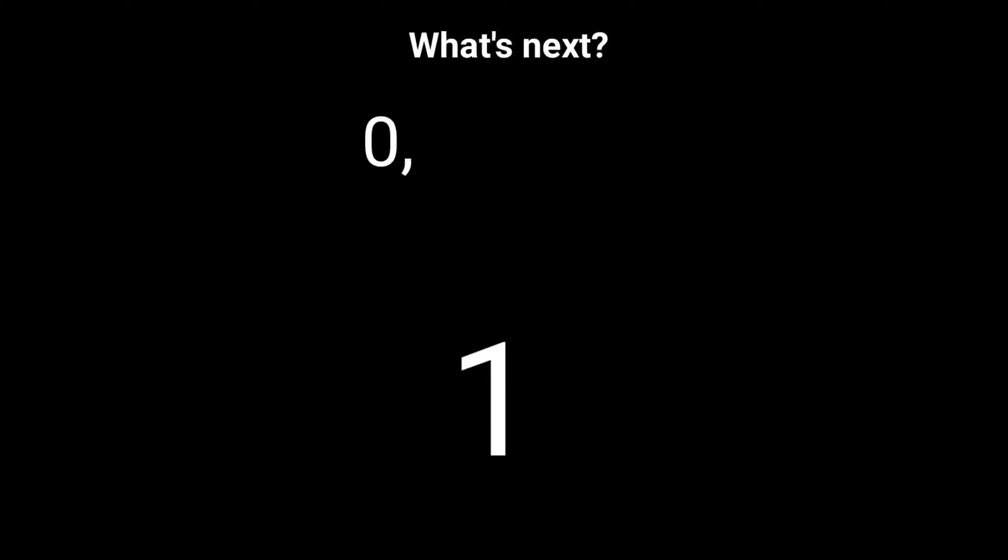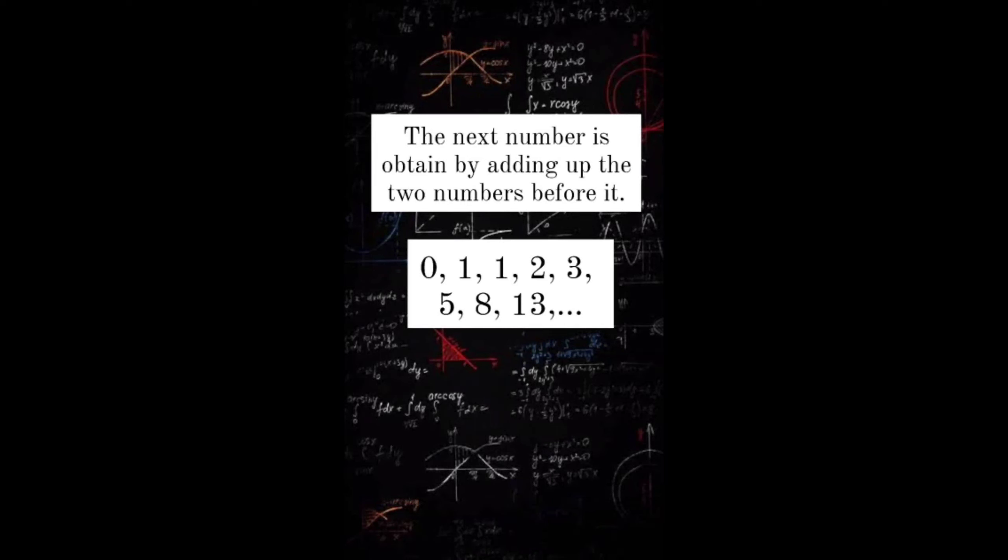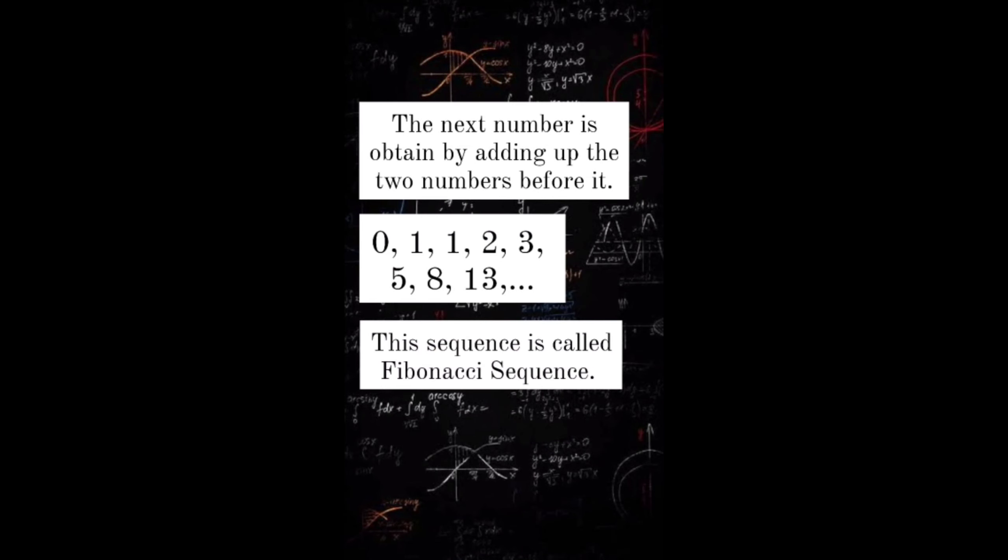0, 1, 1, 2, 3, 5, 8, 13. What's next in the pattern? The next number is obtained by adding up the two numbers before it. This sequence is called Fibonacci sequence.